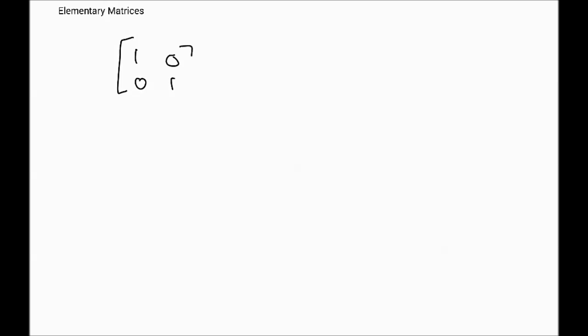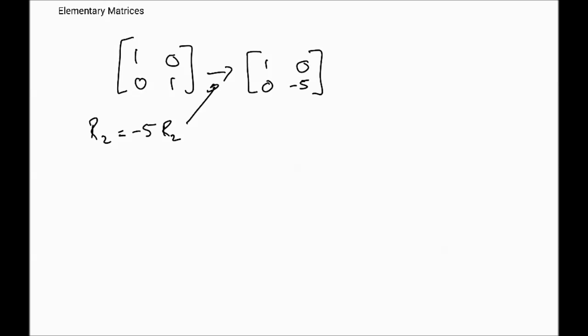Our next topic is elementary matrices. Elementary matrices are basically identity matrices that in a way store an elementary row operation. For instance, consider the two by two identity matrix with ones on the diagonal. Suppose you wanted to perform the row operation R2 → -5R2, meaning the new second row is multiplied by negative five. If you apply this operation to the identity matrix, the first row remains one zero, and the second row becomes zero, minus five.